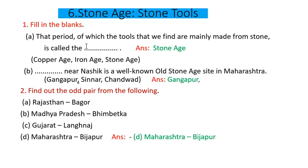That period of which the tools that we find are mainly made from stone is called the stone age. B: Dash near Nashik is a well known old stone age site in Maharashtra. Maharashtra mein Nashik ke nazdik kaun sa well known old stone age site hai? Options: Gangapur, Sinar, Chanwad. Answer is Gangapur. So Gangapur near Nashik is a well known old stone age site in Maharashtra.